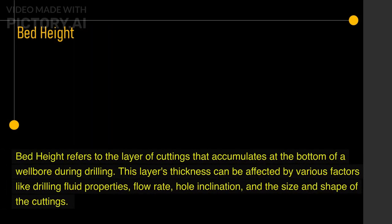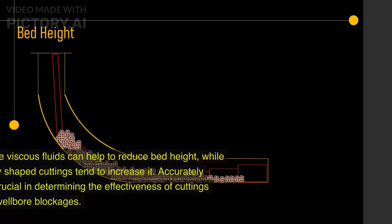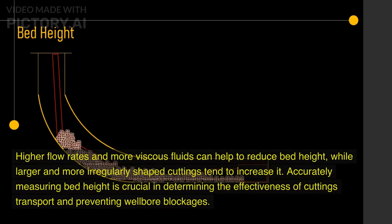Bed height refers to the layer of cuttings that accumulates at the bottom of a wellbore during drilling. This layer's thickness can be affected by various factors like drilling fluid properties, flow rate, hole inclination, and the size and shape of the cuttings. Higher flow rates and more viscous fluids can help to reduce bed height, while larger and more irregularly shaped cuttings tend to increase it. Accurately measuring bed height is crucial in determining the effectiveness of cuttings transport and preventing wellbore blockages.